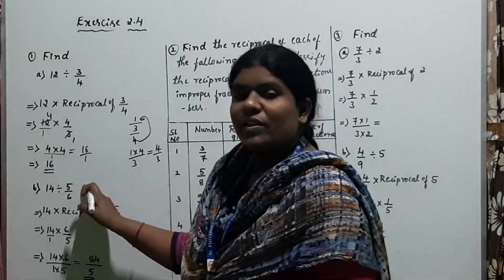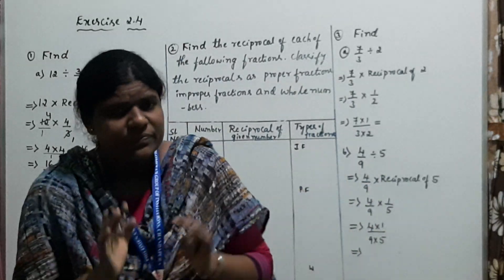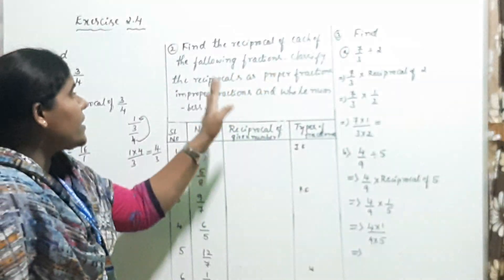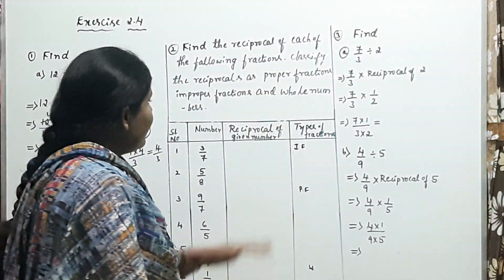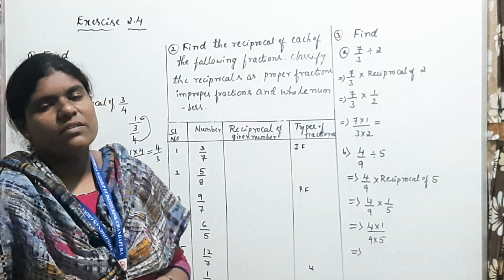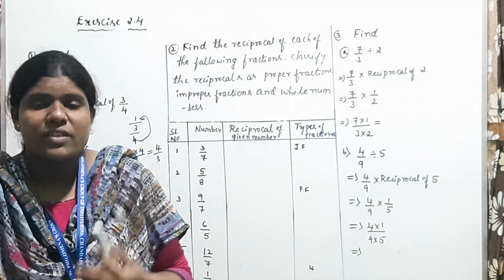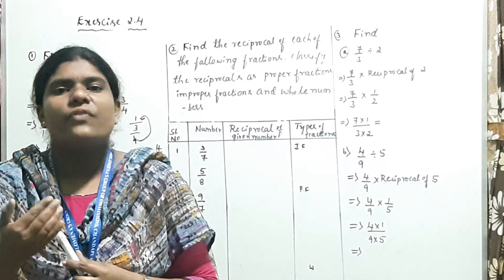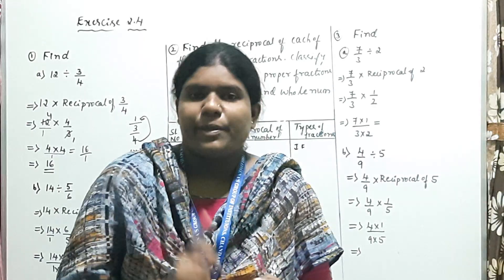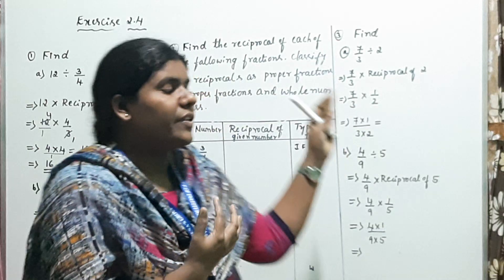Now find the answers for the five given problems. Moving on to the second main question: find the reciprocal of each of the following fractions and classify each reciprocal as a proper fraction, improper fraction, or whole number. You find the reciprocal of each given number and then classify whether it is proper, improper, or a whole number.